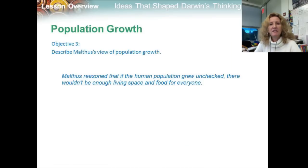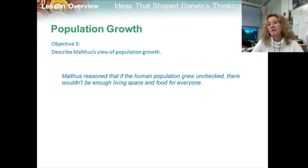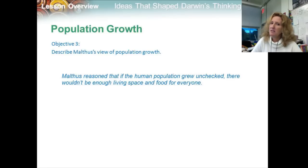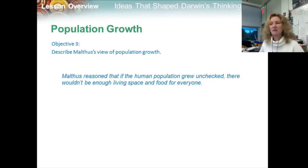Malthus reasoned that if the human population grew unchecked, there wouldn't be enough living space and food for everyone, and only war, famine, and disease would stop us from taking over.